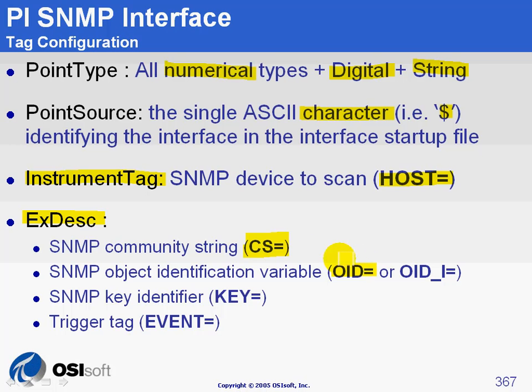Something else you can use in the extended descriptor is the KEY keyword, which is used to identify the network interface you are monitoring. For example, on a switch you could have a port called FastEthernet 4.4, and using the KEY keyword you could tell the interface that this tag is meant to monitor that particular port.